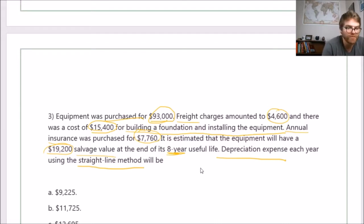That's a lot of stuff. We're going to figure out the cost of that equipment first—that's important—and then go from there. We start off with the purchase cost, which is $93,000, then you've got some freight—you need to ship it, right—that's part of the cost, same with installation and foundation of $15,400.